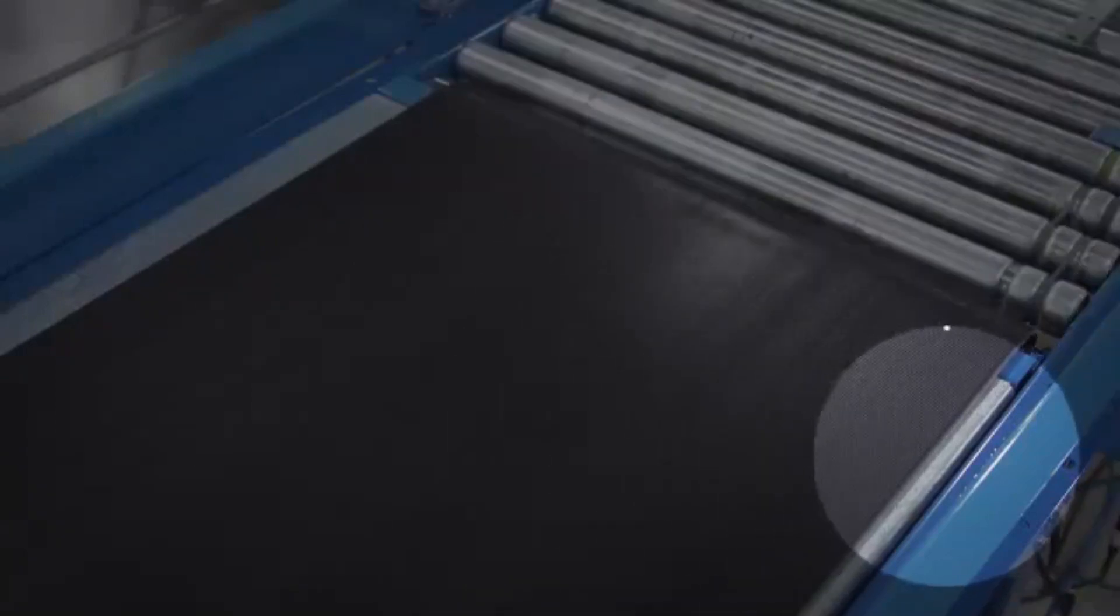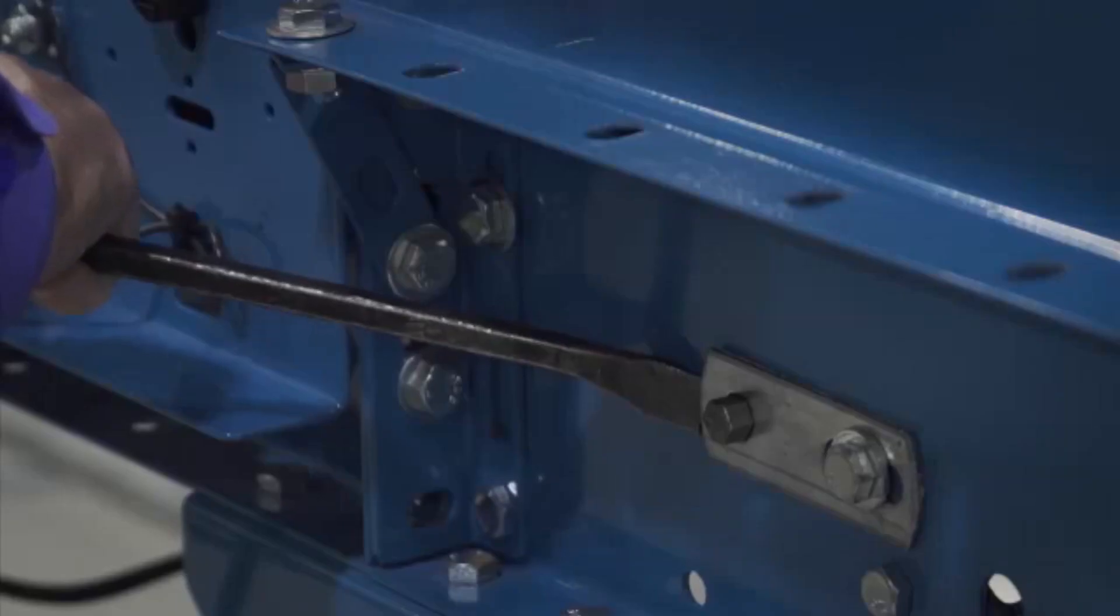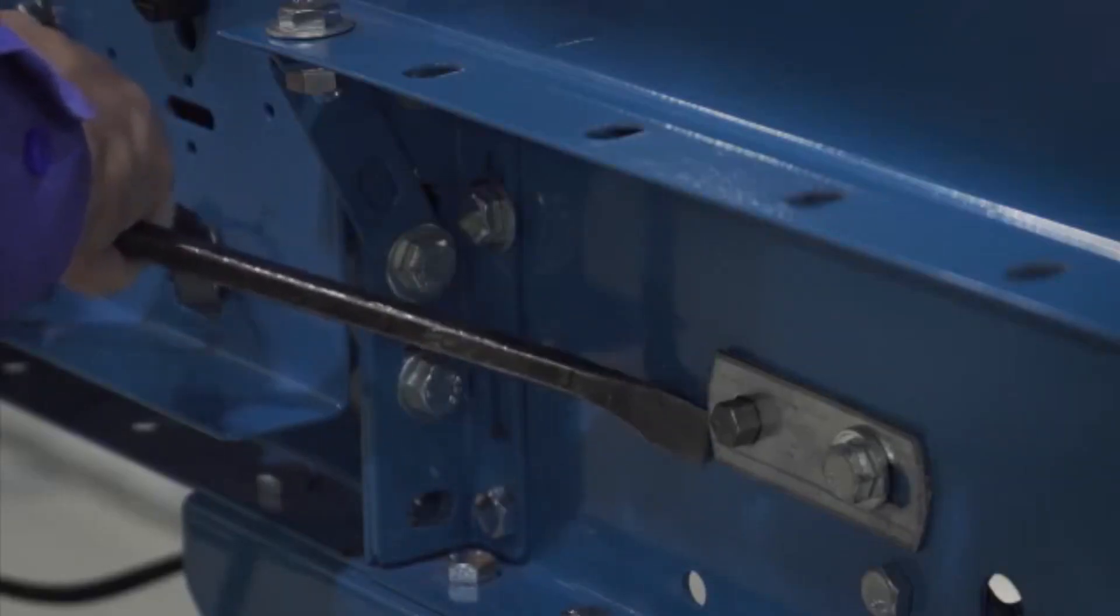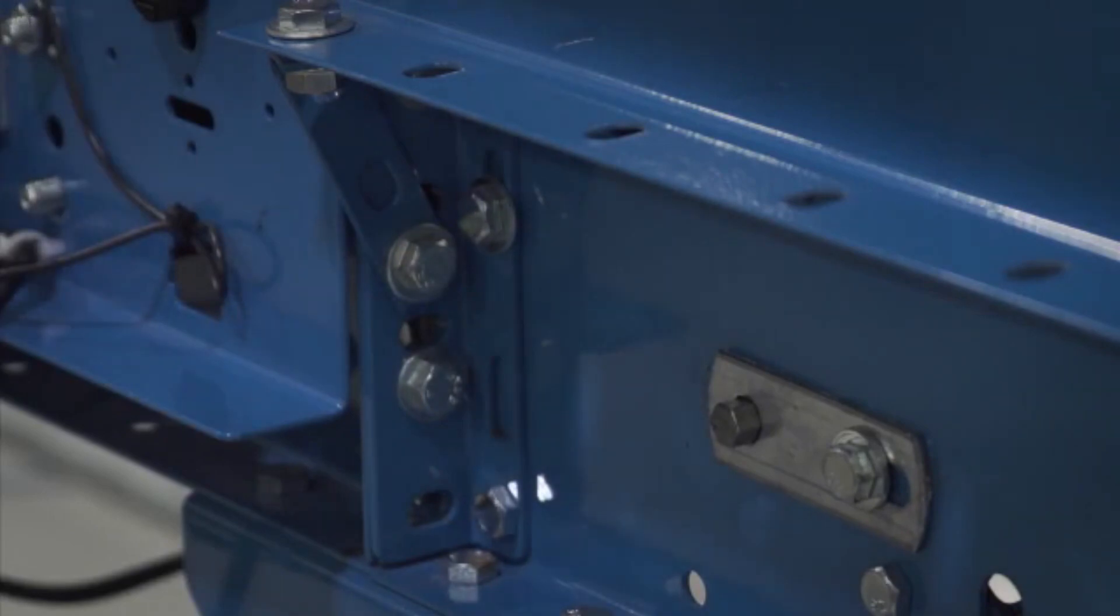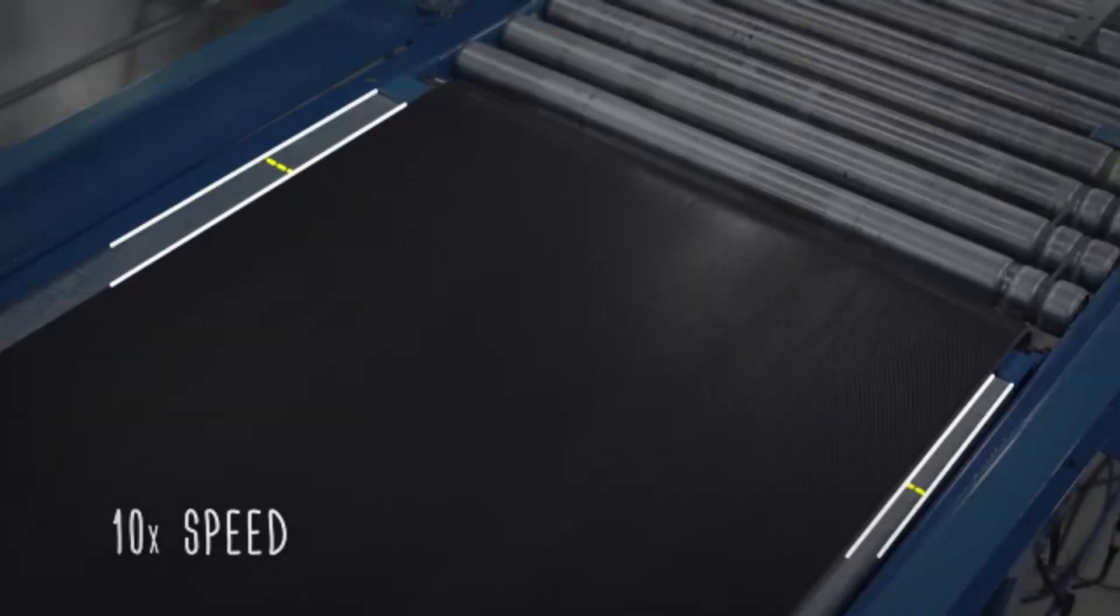When the belt is running and drifting toward one side, locate the snub idler on the opposite side and move it toward the discharge end of the conveyor until the belt tracks normally.